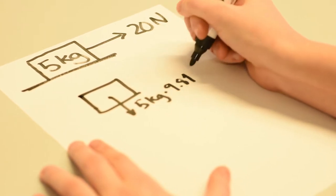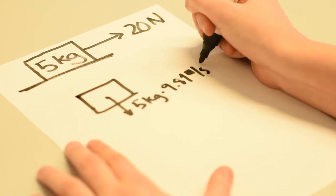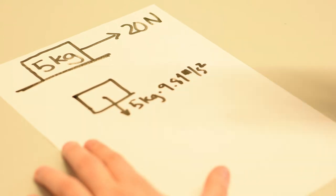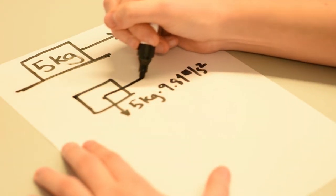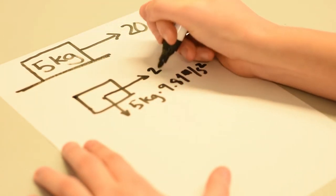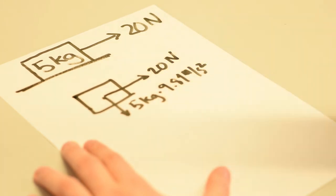And we know that the acceleration due to gravity equals 9.81 meters per second squared. However, the way that I have this free body diagram written, the box should be falling. But it's not falling. It's moving parallel to the surface.